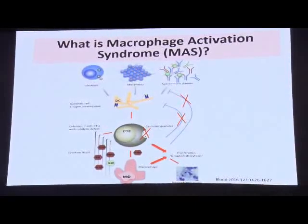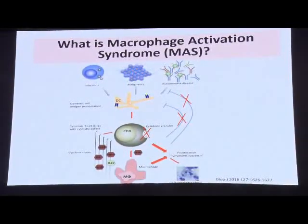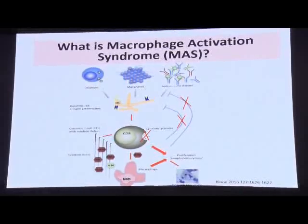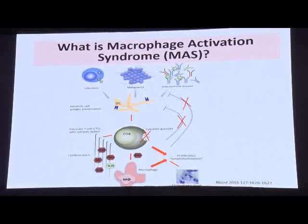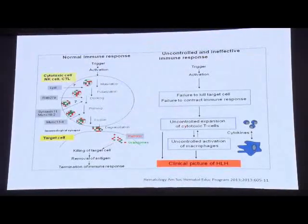With this cascade, a lot of macrophages and T lymphocytes get activated, resulting in clinical manifestations. The normal immune response involves cytolysis and destruction of the target cell. If that doesn't happen, there is uncontrolled expansion of cytotoxic T cells and uncontrolled activation of macrophages, resulting in the clinical picture of HLH or macrophage activation syndrome.